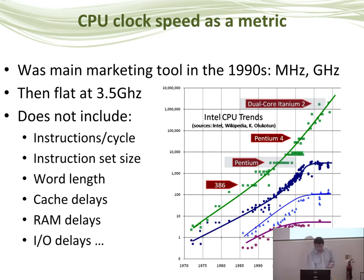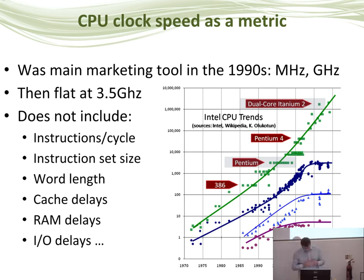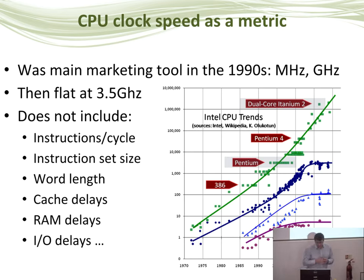What has happened instead over the last two decades is that the number of transistors we can fit on a piece of silicon has continued to increase — that is sometimes quoted as Moore's Law. Others used to quote clock speed as a form of Moore's Law, but you can see they diverged around the early 2000s.